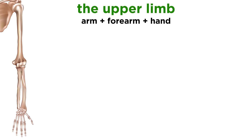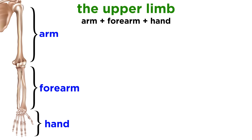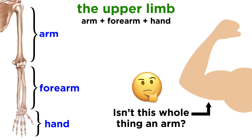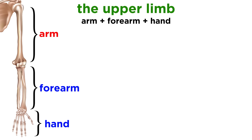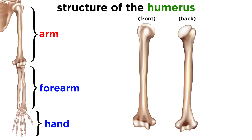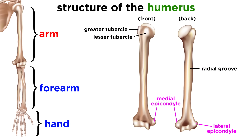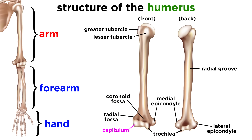From here we move on to the upper limb. This consists of the arm, forearm, and hand. Though colloquially we think of this whole thing as an arm, when speaking in terms of anatomy, it is just the upper portion that we call the arm. In the arm, we find the humerus, a typical long bone with its greater and lesser tubercle, radial groove, medial and lateral epicondyle, radial and coronoid fossa, trochlea, and capitulum.